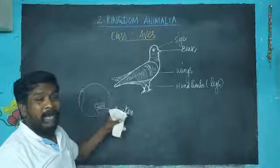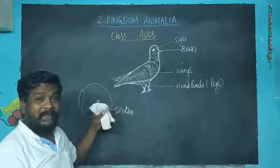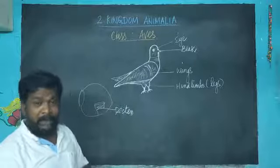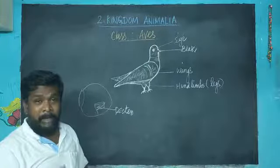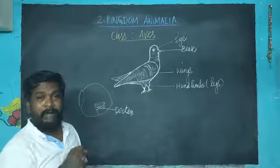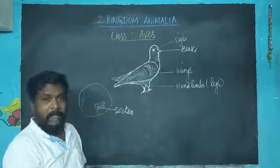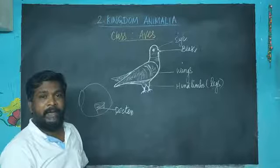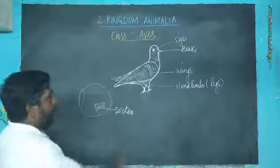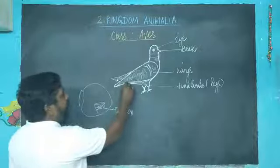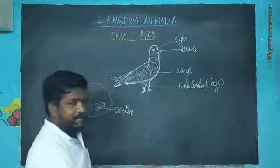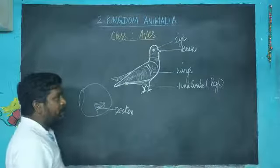In males, the testes are paired in nature. In females, the ovary is also a pair, but only the left ovary is functioning; the right ovary is not functioning. The common opening is called the cloaca, which is used for both excretion as well as reproduction.